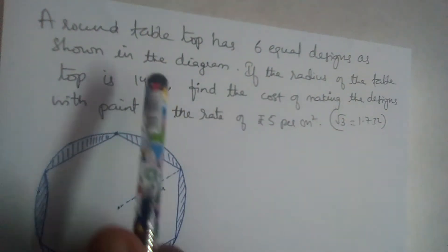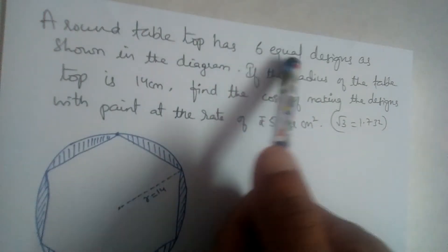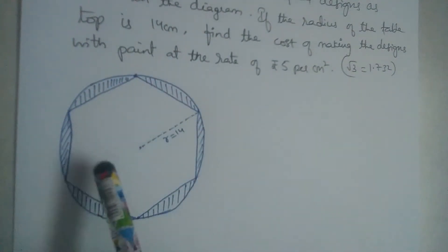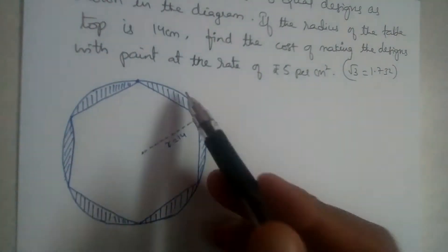Let us solve this problem. A round table top has six equal designs as shown in the diagram. So this is the diagram. Six equal designs are there like this: one, two, three, four, five, six.